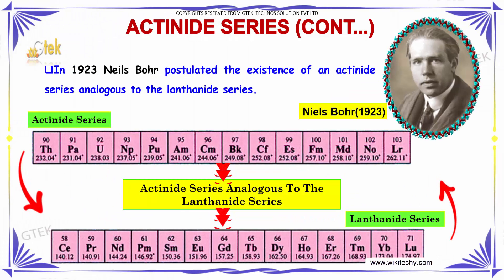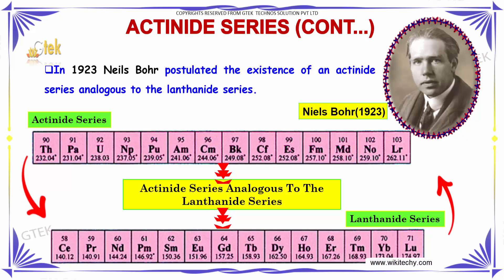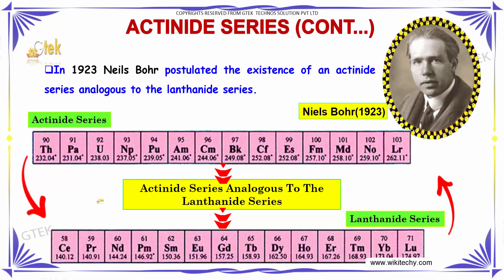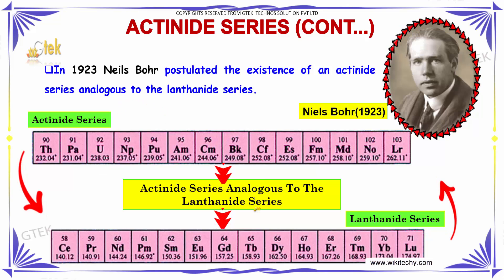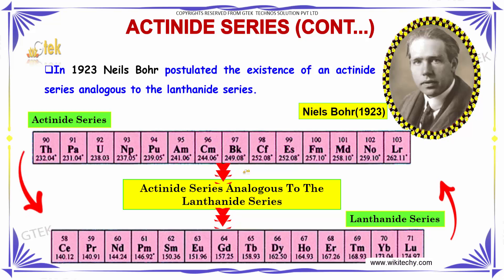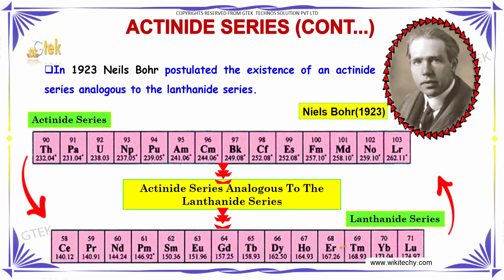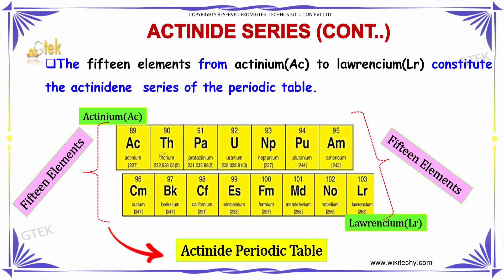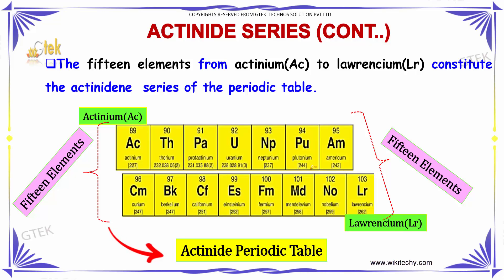In 1923, Niels Bohr postulated the existence of an actinide series, analogous to the lanthanide series. The 15 elements from actinium to lawrencium constitute the actinide series of the periodic table.